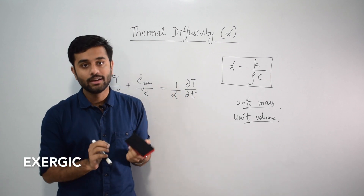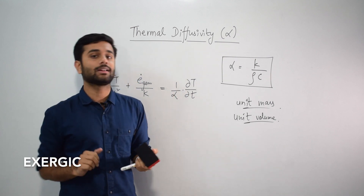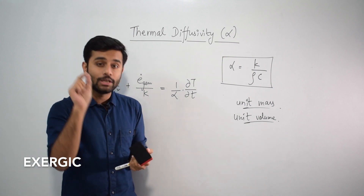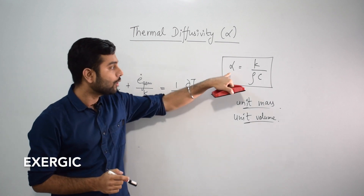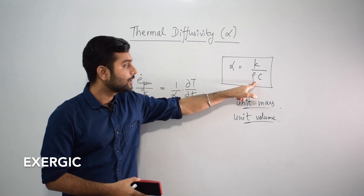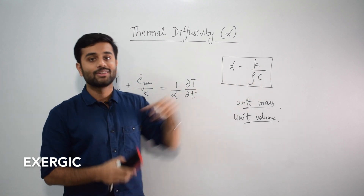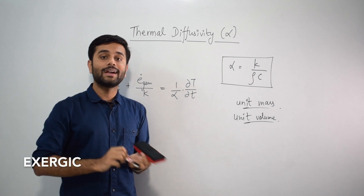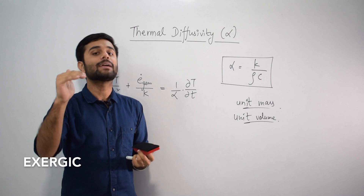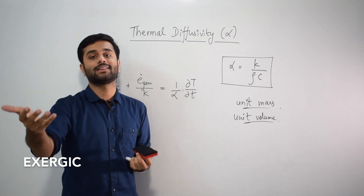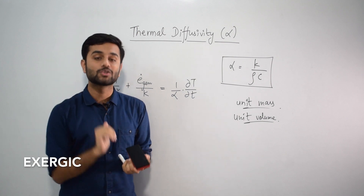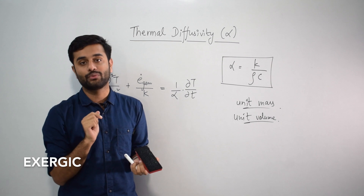If you have an application where you want the material to be conducting but you don't want its temperature to rise quickly, you will use a material having a lower value of thermal diffusivity. Although it will be conducting, since the denominator will be very high, heat will travel fast but its effect — which is a rise in temperature — won't come fast. Temperature will rise slowly, so at that place you will use a lower thermal diffusivity.